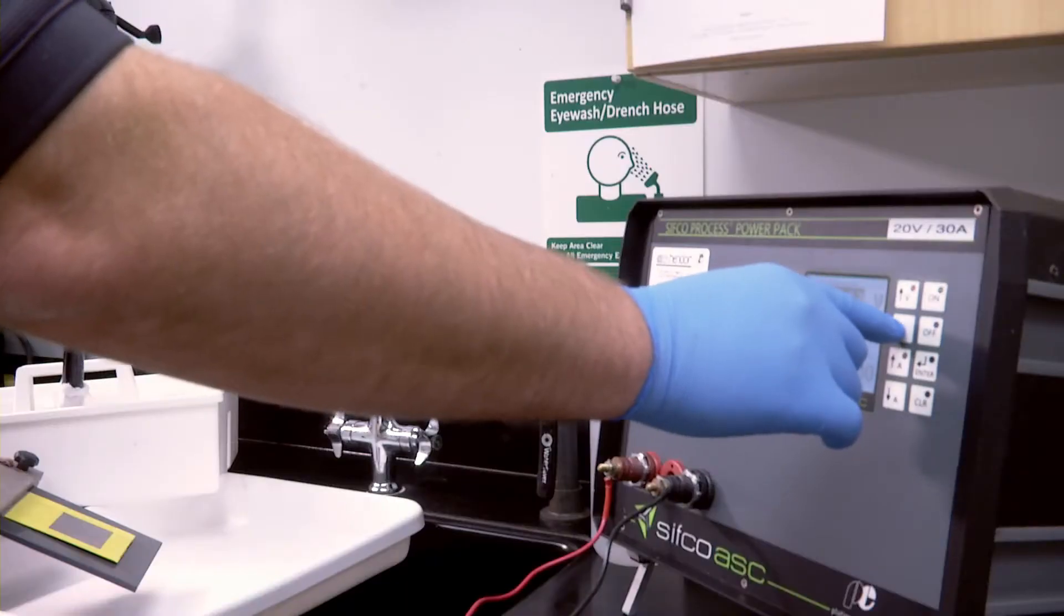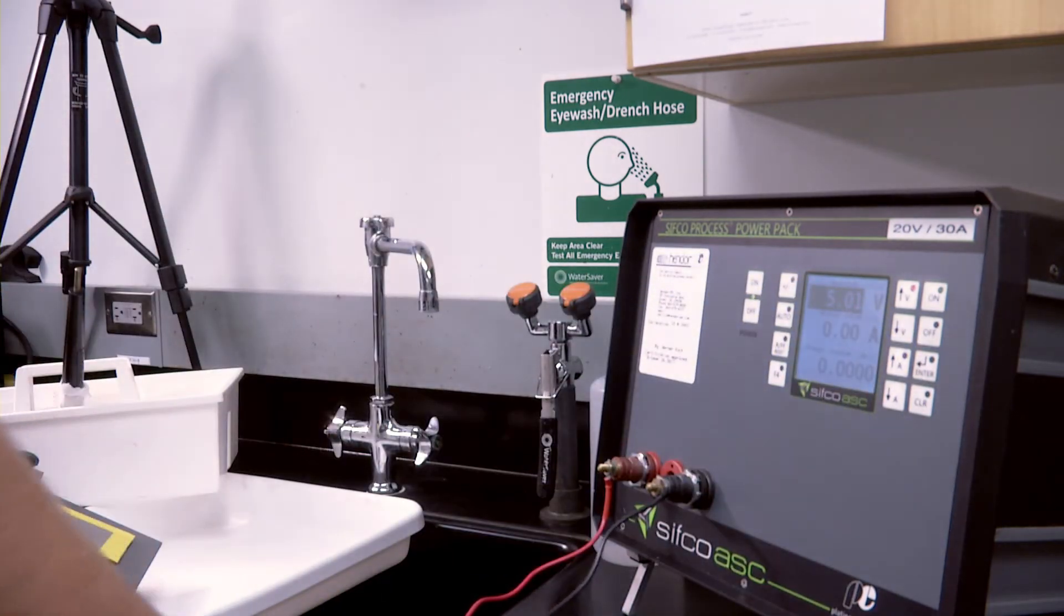The part being processed is a high strength steel coupon that will be used for salt spray testing. The part was solvent cleaned, masked, and then placed into the holding fixture for plating.